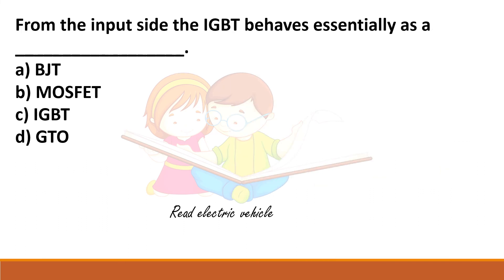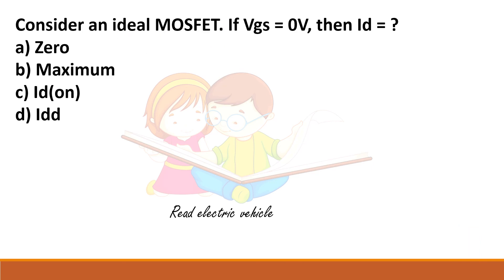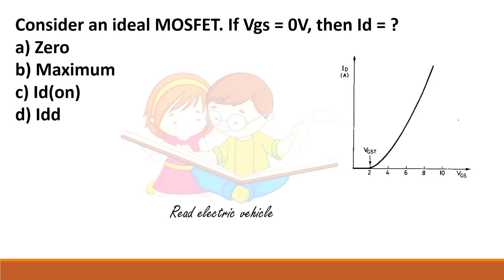From the input side, the IGBT behaves essentially as a MOSFET, since IGBT combines BJT and MOSFET characteristics — input side similar to MOSFET, output side similar to BJT. For an ideal MOSFET, if VGS equals zero, then the drain current ID equals zero.